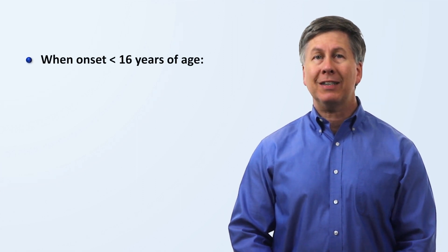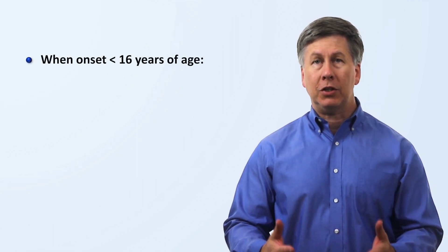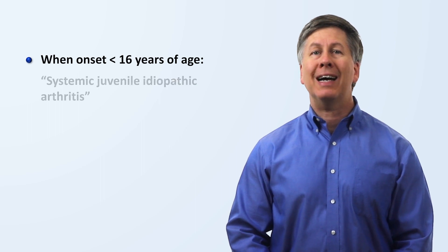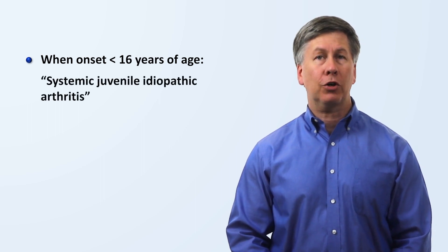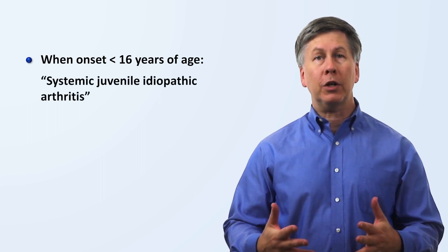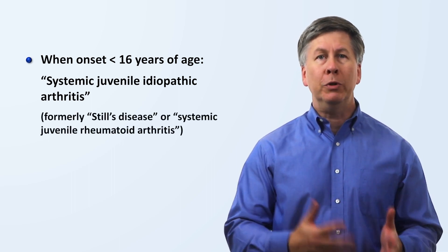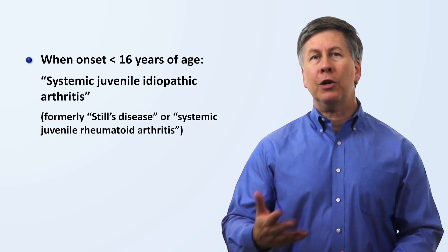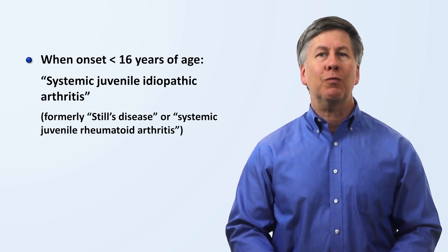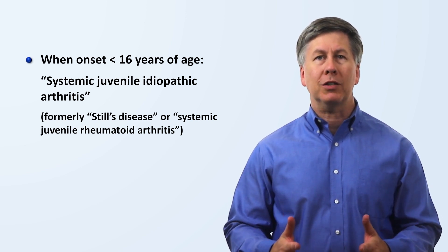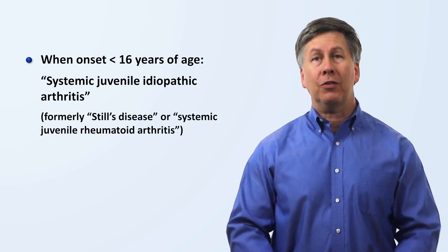Using the most up-to-date terminology, when the disease onset is at an earlier age than 16 years, it is referred to as systemic juvenile idiopathic arthritis. It was formerly known as either Still's disease or systemic juvenile rheumatoid arthritis, though this latter name was misleading since it doesn't really resemble rheumatoid arthritis either clinically or pathologically.